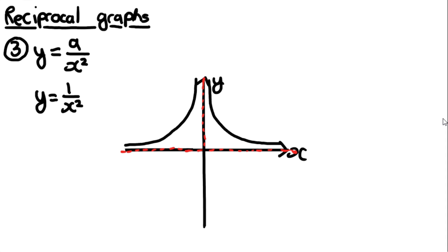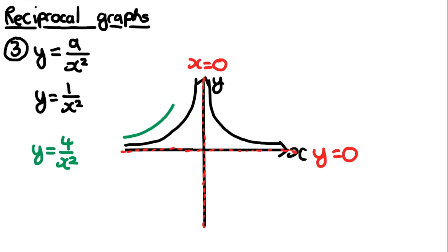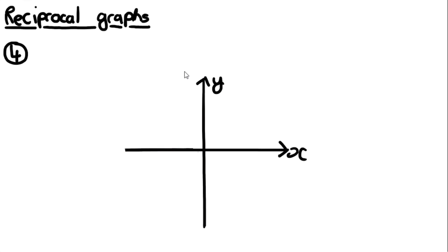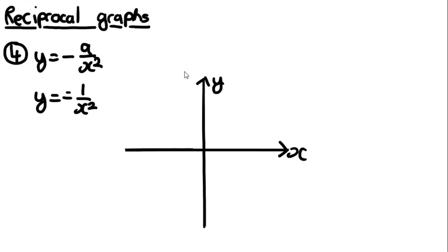Remember to label the asymptotes — that's the most important thing. The asymptotes are again exactly the same: x = 0 and y = 0. Once again, sketching y = 4/x² on the same axis gives exactly the same graph, just moved slightly further away from the axes. The fourth and final type is in the form y = -a/x². For example, y = -1/x².